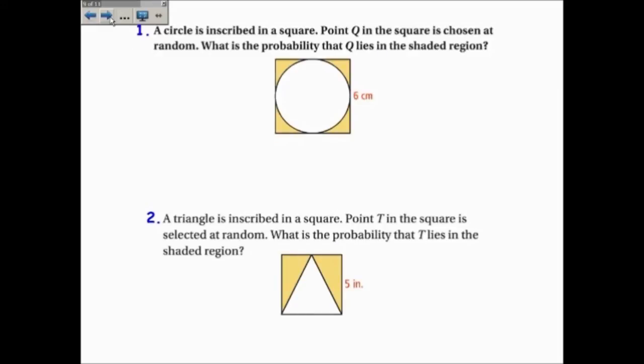Another question. A circle is inscribed in a square, meaning a circle is placed perfectly inside a square. Point Q is in the square, is chosen at random. What is the probability that Q lies in the shaded region?